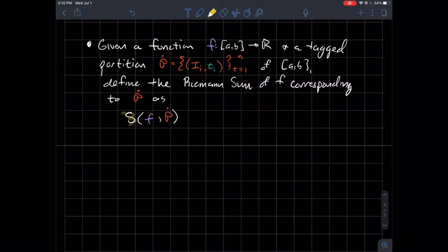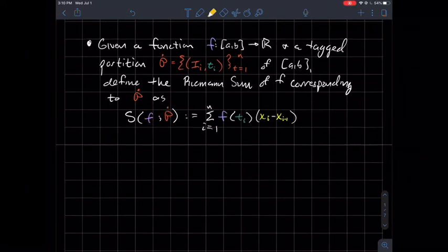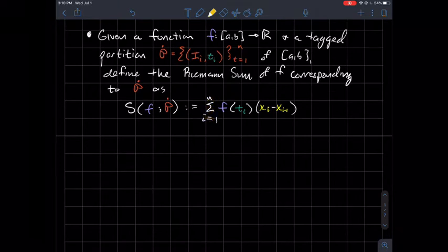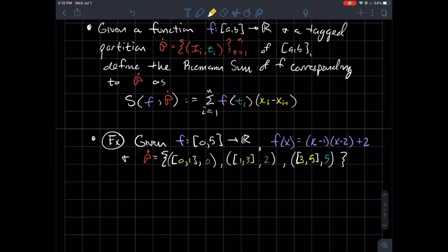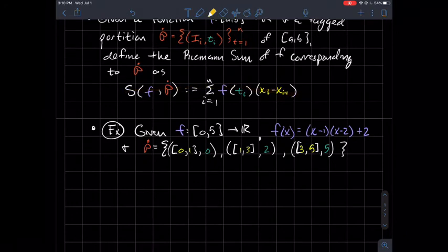The notation for it will be S(f; p dot), trying to get across that s stands for sum, but of this function f with respect to this partition p dot. So how do you actually do it? What's the formula? It is the summation from i equals 1 to n of f evaluated at each tag times the width of that subinterval where that tag lived.